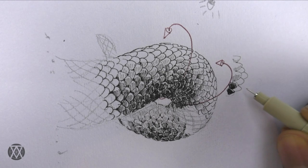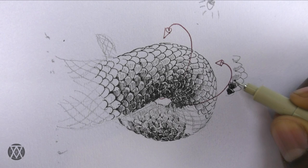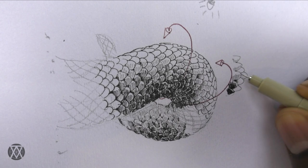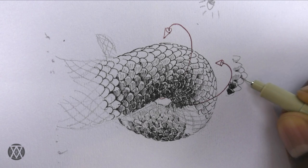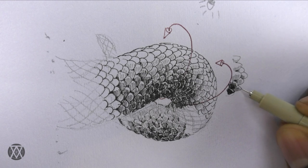The scales overlap, so I make sure there's a little bit of shadow in between these areas where the scales overlap. And you're just basically repeating this simple technique.